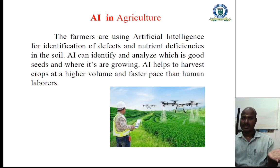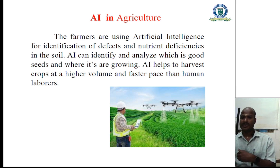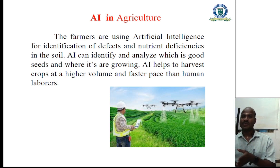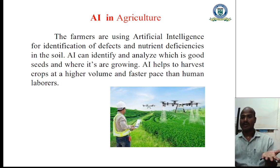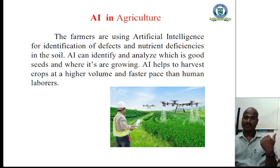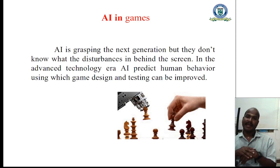The impact of artificial intelligence on agriculture: farmers are using artificial intelligence for identification of defects and nutrient deficiencies in the soil. Artificial intelligence can identify and analyze which seeds are good and where they are growing. It helps to harvest crops at a higher volume and faster pace than human laborers. This is the impact on agriculture.